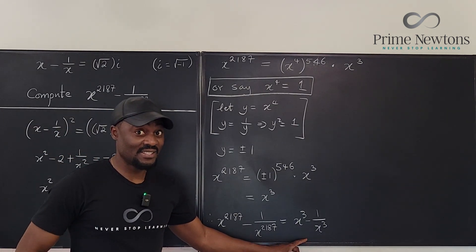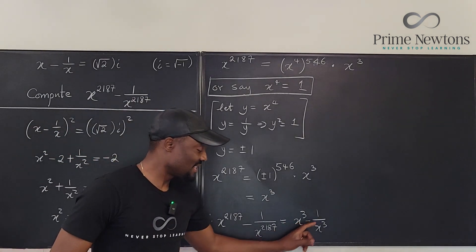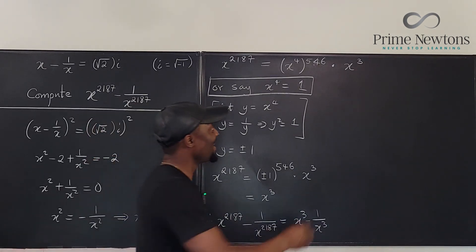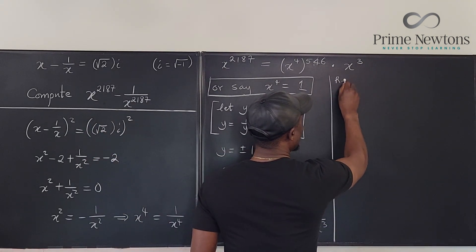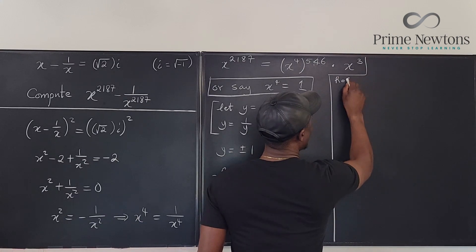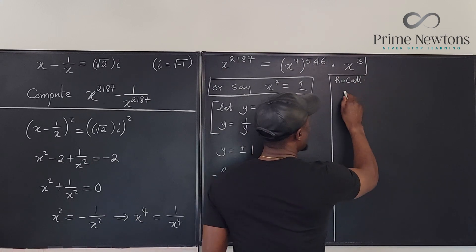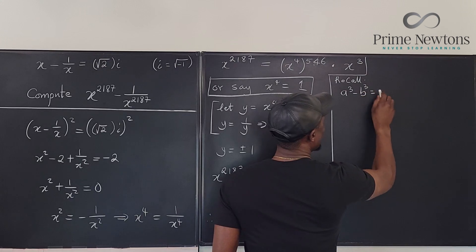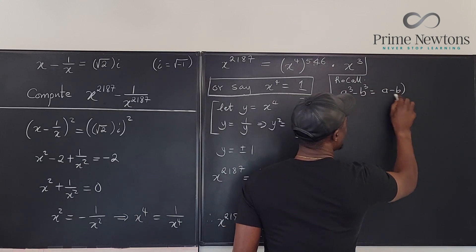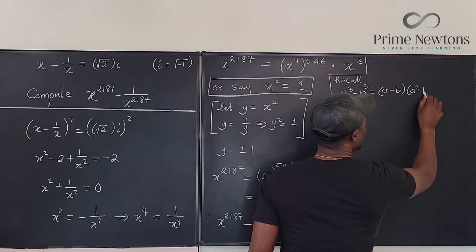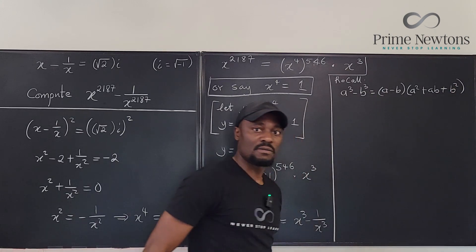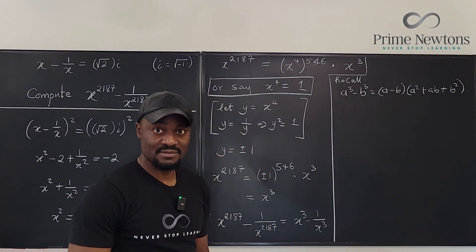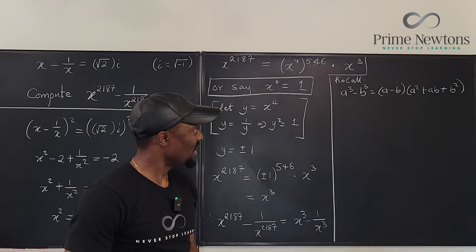And this is easy to compute because this is the difference of two cubes, right? Recall that a cubed minus b cubed is the same thing as (a minus b) times (a squared plus ab plus b squared). This one you know from algebra, and that's it.